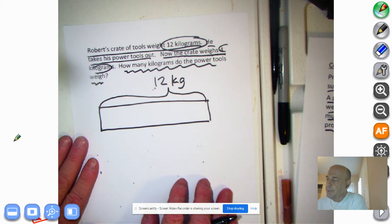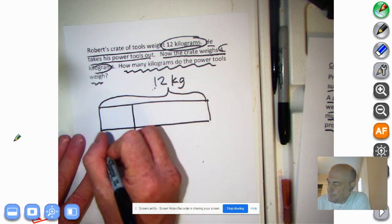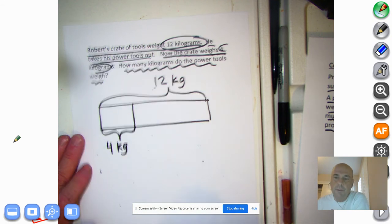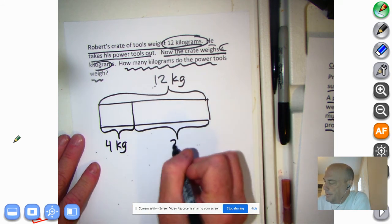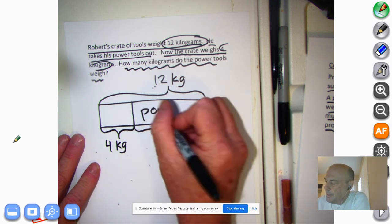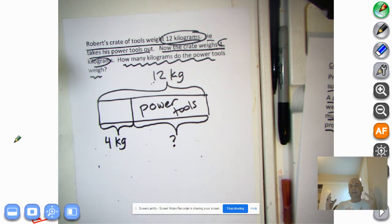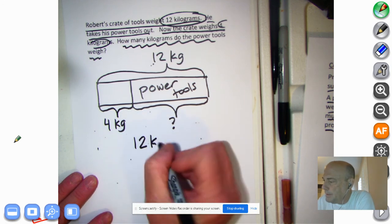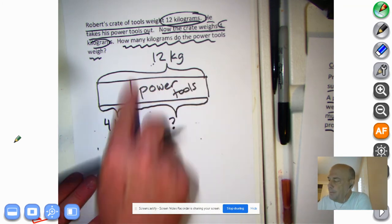He takes out the power tools. And now it only weighs 4 kilograms. So these are all the tools except the power tools, all right? So now we know that this is what we don't know, and this is what the power tools weigh, okay? So we need to find this out. How are we going to go about doing this? I want you to think about it. Maybe you already know, but if you don't follow along. We're going to take 12 kilograms, the total weight of the toolbox. There's crate of tools, and we're going to subtract this amount, and that will let us know the weight of the power tools.